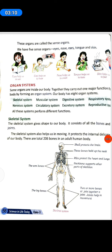Organ Systems. Some organs are inside our body. Together they carry out one major function for the body by forming an organ system. Our body has 8 organ systems.